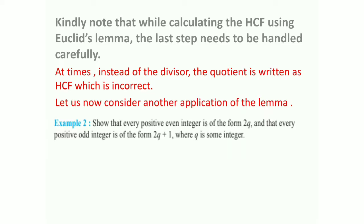Let us now consider another application of the lemma — Example 2: Show that every positive even integer is of the form 2q and every positive odd integer is of the form 2q plus 1. For instance, 48 can be written as 2 into 24, and 35 can be written as 2 into 17 plus 1. So every even integer can be written as 2 times some integer, and every odd integer can be written as 2 times some integer plus 1. We will prove this using Euclid's Division Lemma.